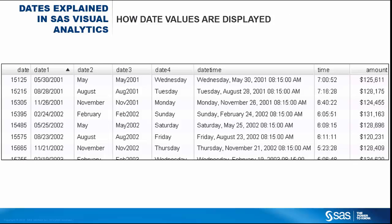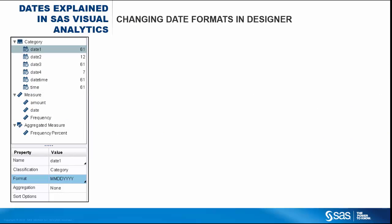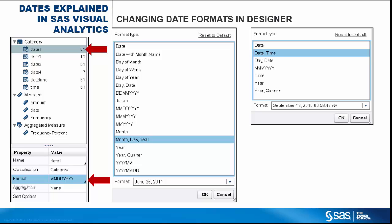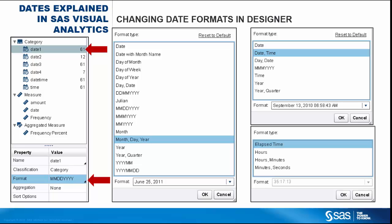This list table illustrates how the date values display with each associated format. You can modify your date formats in the Designer by clicking on a date data item to display that item's properties below. To change the format, click in the value cell for the format in the data item properties. This is the list of available date formats. If you were modifying a date-time format, you would see a different list. There's also a comparable list of time formats if you want to modify the format for a time data item.